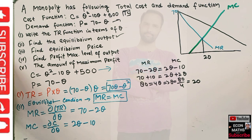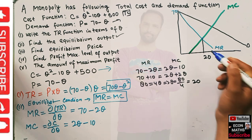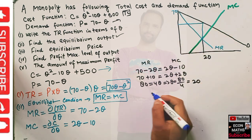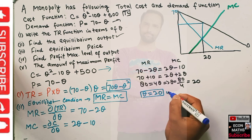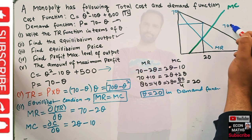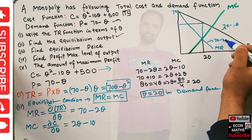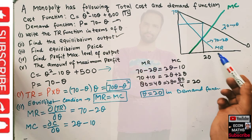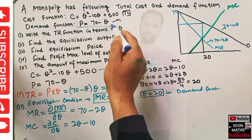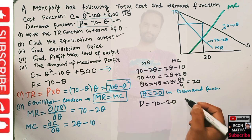Now what will be the equilibrium price? Since this is our demand function — which we also call the average revenue function — we just plug q equals 20 into the demand function. The demand function is p equals 70 minus q, so the price will be equal to 70 minus 20, which comes out to be 50. So the equilibrium price is 50.